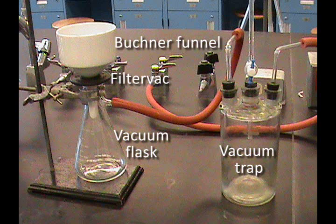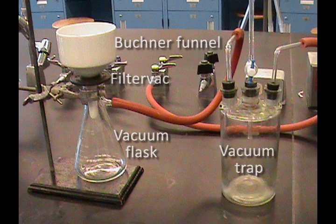A trap is used to prevent liquid from being sucked into the vacuum system. The washer ensures that a seal is made between the funnel and the flask.